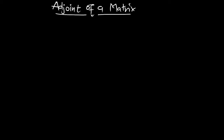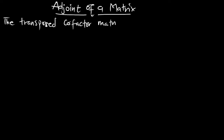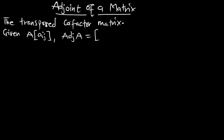In this episode we are going to find the adjoint of a matrix. When we say adjoint of a matrix, that's the transposed cofactor matrix. The adjoint is obtained by transposing the cofactor matrix. So if we are given a matrix A as A_ij, then the adjoint of matrix A is written as adjoint of A, giving us a certain matrix A_ij.